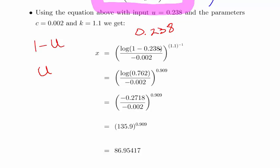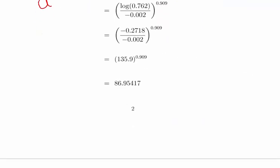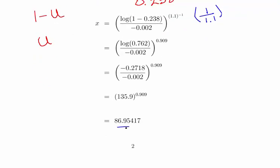So log of 1 minus 0.238 divided by minus 0.002 to the power of 1.1 to the power of minus 1, in other words, the power of 1 over 1.1. This is a little bit of calculator work. What you should get is a number that is close to 86.95, so you should be in the region of 87, allowing for some decimal places. The way I have it stated there is 86.95417. But if you're close to that, that's fine.